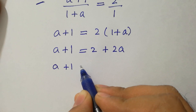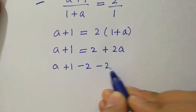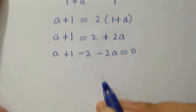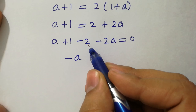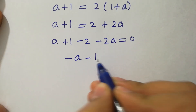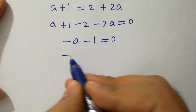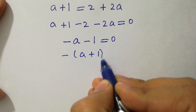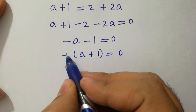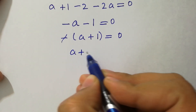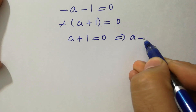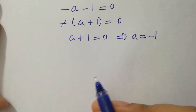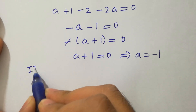Rearranging: a - 2a + 1 - 2 = 0, which gives -a - 1 = 0. Factoring out minus, we get a + 1 = 0. Multiplying both sides by minus, we have a + 1 = 0, so the value of a is equal to minus 1.